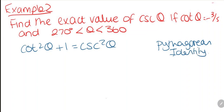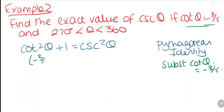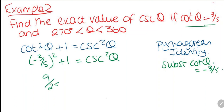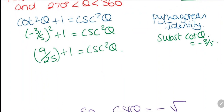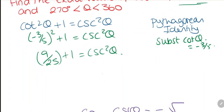We're going to substitute in the value we know. Cotangent theta equals minus 3 fifths, so we substitute minus 3 fifths squared plus 1 equals cosecant squared theta. Squaring gives us 9 over 25 plus 1. And 1 is 25 over 25, so this gives us 34 over 25.